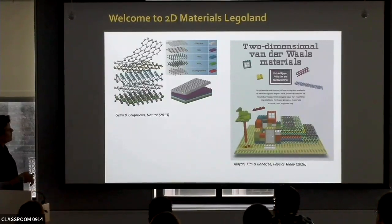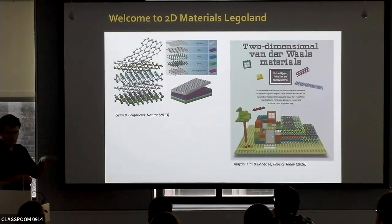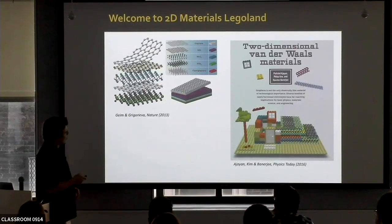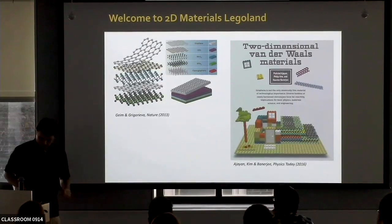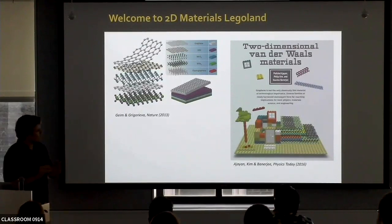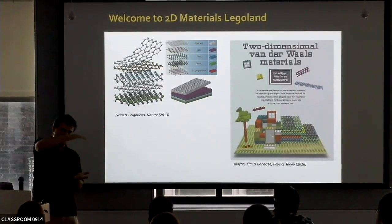This led to many reviews where colleagues wrote about analogies with Legoland, where each Lego piece is like a 2D material. The analogy with Legoland is a very good one — there are not that many systems where you can play this game of putting anything you want on top of anything you want.